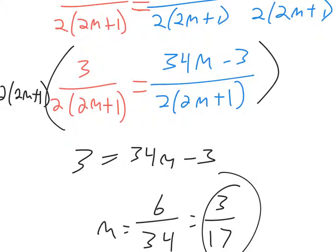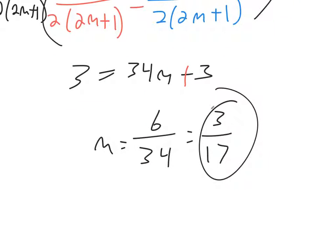Whoops, sorry. Quick little correction here. This is supposed to be a plus 3. So that's a plus 3. And when you subtract 3 from both sides, that's supposed to just give you 0 here. Okay? So I dropped a sign on accident.